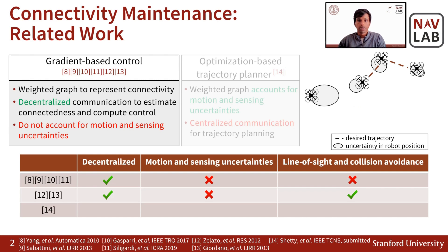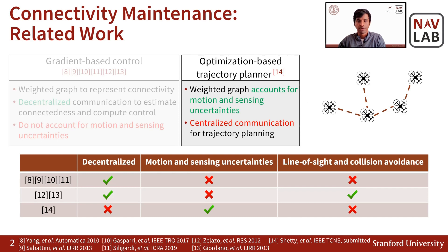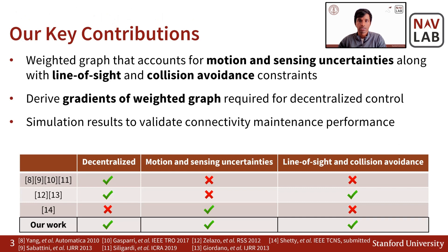In our previous optimization-based work, we defined a weighted graph that accounted for these uncertainties. However, our algorithm had a centralized architecture and hence had limitations with scalability for practical systems. Thus, in our work, we aim to address these limitations. We first define a weighted graph that accounts for motion and sensing uncertainties and also considers additional constraints of line-of-sight communication and collision avoidance. We then derive gradients of this weighted graph required for decentralized gradient-based control. Finally, we show multiple simulation results to validate the connectivity maintenance performance of our algorithm.